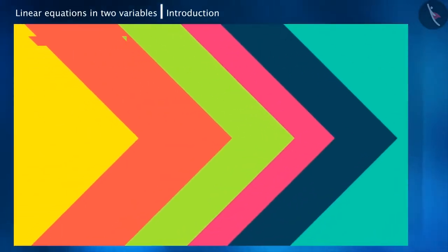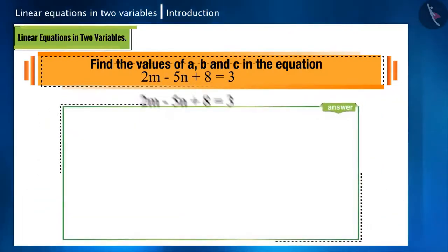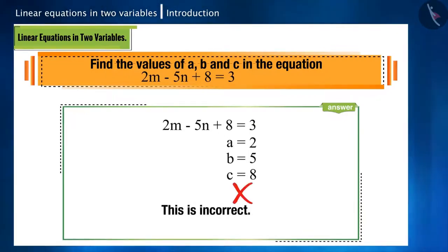Let's take another equation. Find the values of a, b, and c in the equation 2m minus 5n plus 8 equals 3. If you think that here a equals 2, b equals 5, and c equals 8, then you are incorrect.